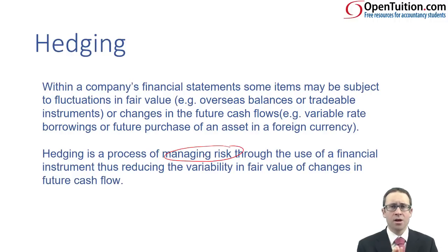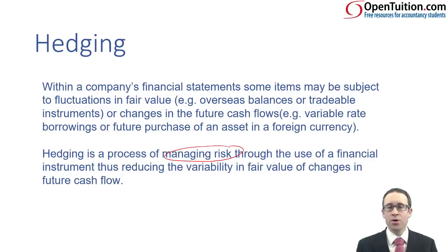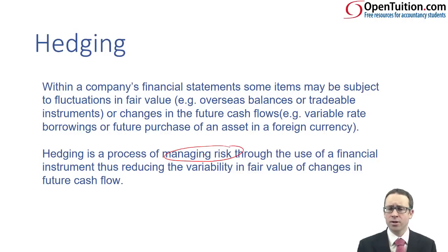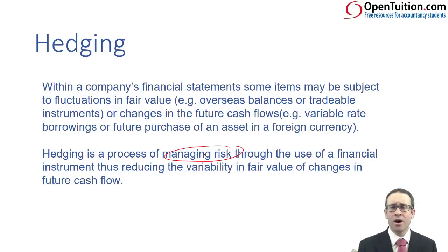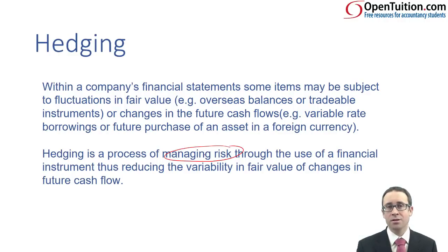Within a company's financial statements, there will be items — whether they are assets or liabilities — that are going to fluctuate in value. For example, you could have overseas balances, whether that's a receivable or a payable; that overseas balance is going to go up and down as exchange rates move. You could have a tradable financial asset or liability — a debt instrument. As market rates change, whether that's share prices or the market rate of interest, the fair value is going to change.